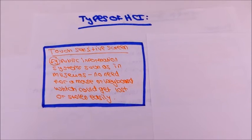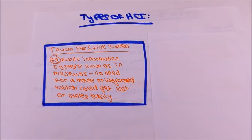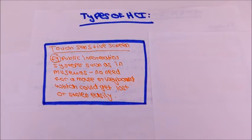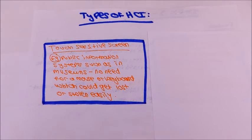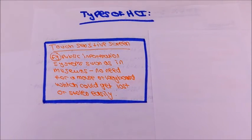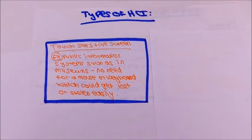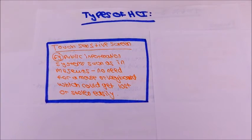Now we're going to talk about the different types of HCI that you may have found. These things were more in the old paper, so like before 2010, but it's still a possibility that it could come up in the A2 paper, so make sure that you know them. One type of HCI is a touch sensitive screen. This could be used in a public information system such as in a museum, and this is useful as there is no need for a mouse or a keyboard which could get lost or broken easily.